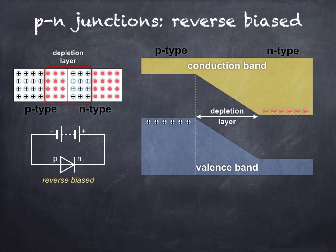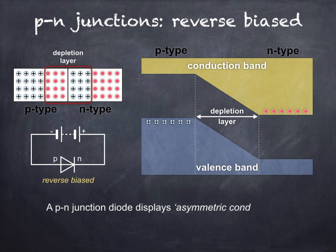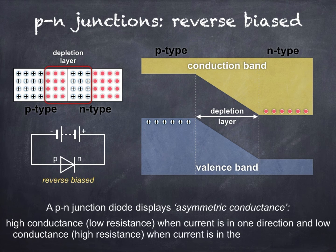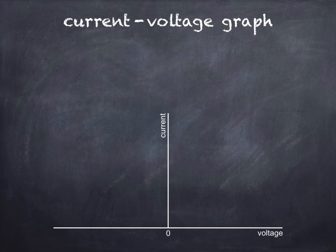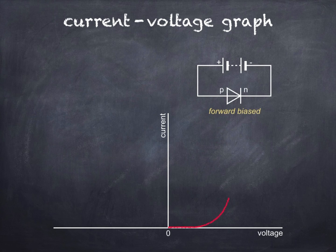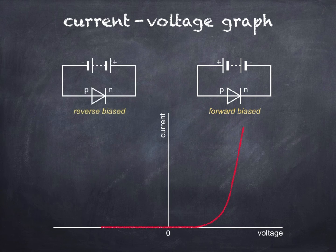The P-N junction diode displays asymmetric conductance — don't worry, this isn't a term you have to learn. What it means is that the P-N junction diode has a high conductance when current is in one direction when forward biased, and an extremely low conductance when current is in the opposite direction when reverse biased. This can be seen in the following graph of current against voltage. When forward biased, the supply voltage has to increase above the junction voltage before there's any noticeable increase in current. When reverse biased, the current is extremely small and the P-N junction is effectively acting as an insulator.